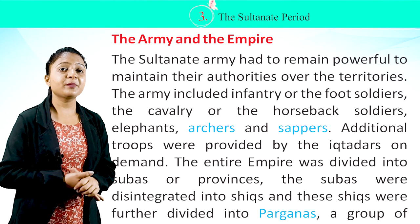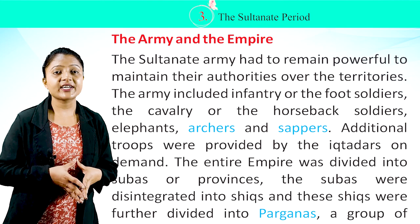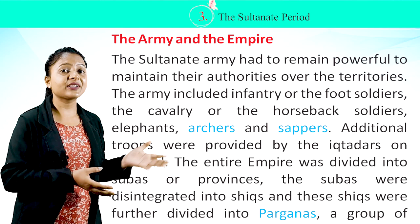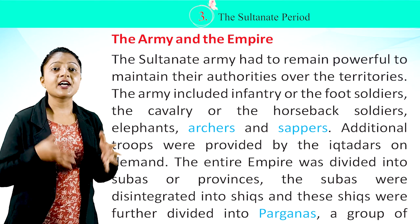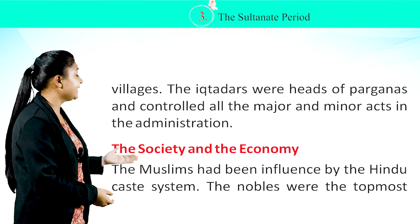The Army and the Empire: The Sultanate army had to remain powerful to maintain authority over territories. The army included infantry or foot soldiers, cavalry or horseback soldiers, elephants, archers, and snipers. Additional troops were provided by the Iqtadars on demand. The entire empire was divided into Subhas or provinces. The Subhas were disintegrated into Shiqs, and these were further divided into Parganaz, which were groups of villages. The Iqtadars were heads of Parganaz and controlled all major and minor administrative acts.